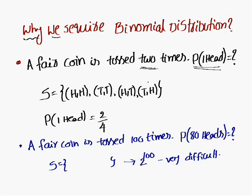How you have to do: the first step is you have to find out the sample space. So, when two coins are tossed, the sample space consists of two-squared elements, that is four elements. We require probability of one head means how many pairs are favorable to one head — two pairs are favorable out of four pairs. Therefore, probability of one head is equal to two by four.